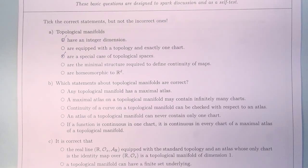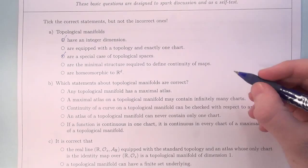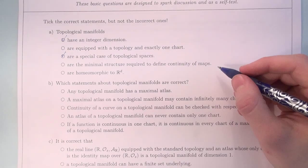Topological spaces are the minimal structure required to define continuity of maps. No, this is not correct. Continuity of maps can already be checked on topological spaces.